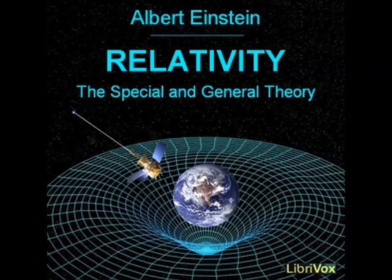We can imagine innumerable laws which would serve the same purpose, without our being able to state a reason why one of them is to be preferred to the others. For any one of these laws would be founded just as little on more general theoretical principles as is the law of Newton. End of section 30. Section 31: The possibility of a finite and yet unbounded universe. But speculations on the structure of the universe also move in quite another direction.